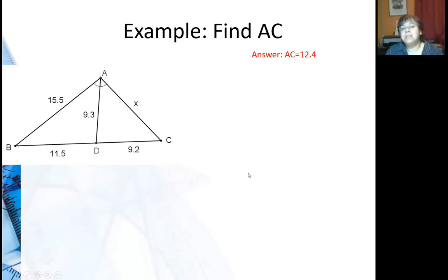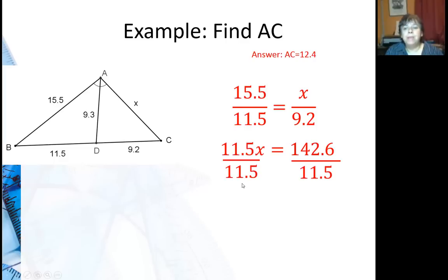So it's very easy to set up the problem. Basically you're going to go 15.5 over 11.5 equals X over 9.2, cross multiply, and then divide by the coefficient of X which is 11.5, and so you get X is 12.4.